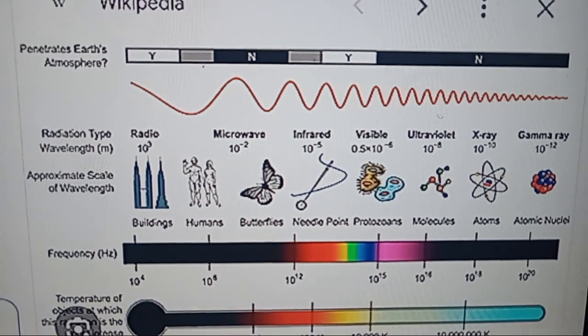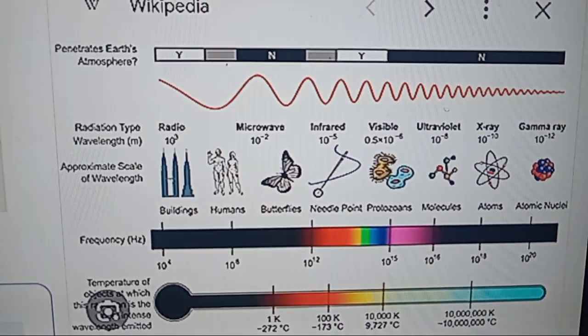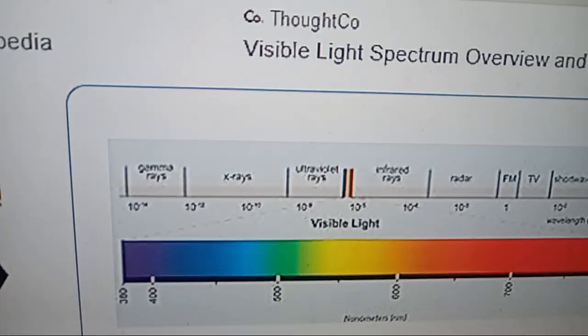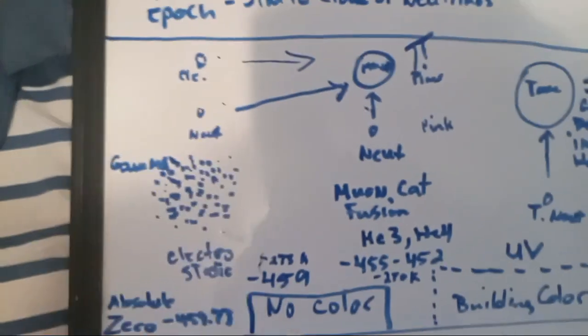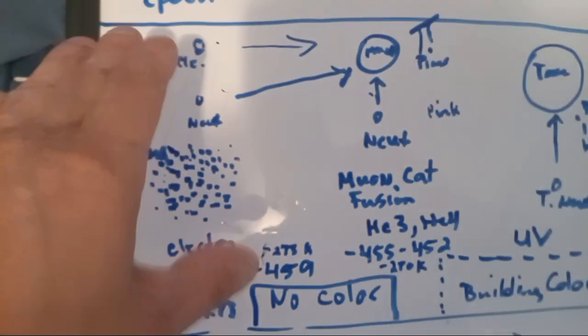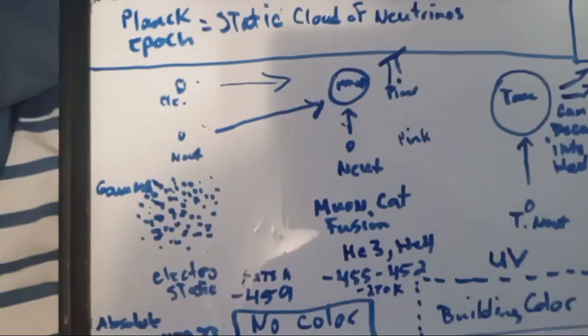All of this gamma here is all that electromagnetic radiation—neutrinos and electrons. For the condensing, you have muons, muon catalyzed fusion.